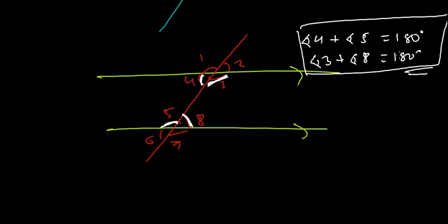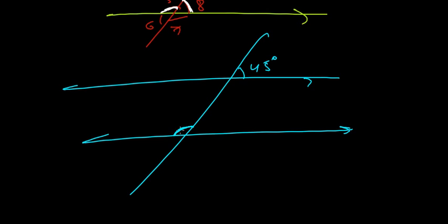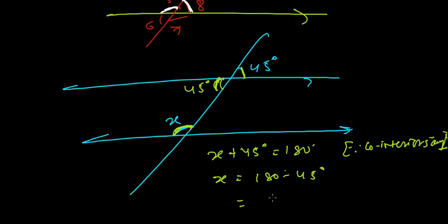Let's do another example. Two parallel lines are cut by a transversal. One angle is 45 degrees and you need to find the value of x. The vertically opposite angle to the 45-degree angle is also 45 degrees. Now, since this angle and x are co-interior angles: x plus 45 degrees equals 180 degrees. Therefore, x equals 180 minus 45, which is 135 degrees.